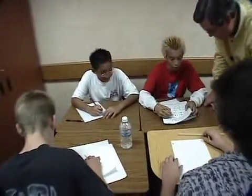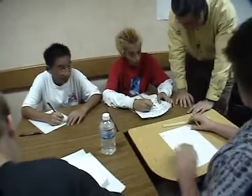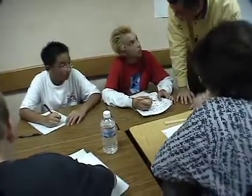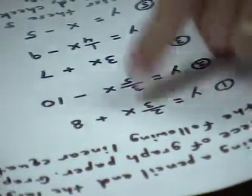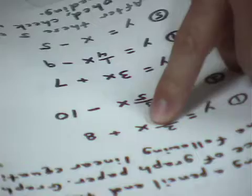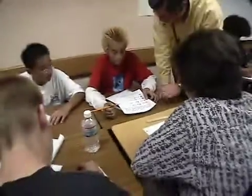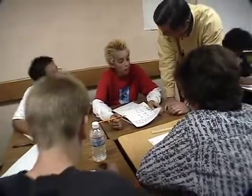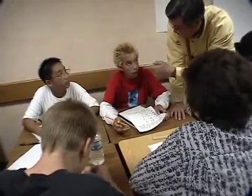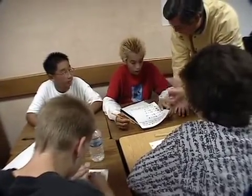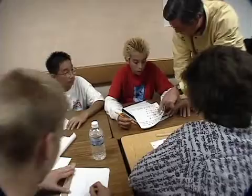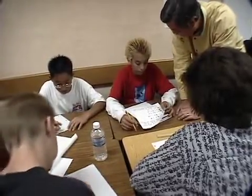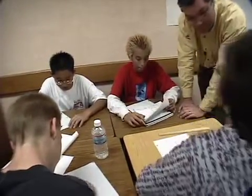Zero is our favorite number. You put in zero, two-thirds times zero is zero. Plus eight is eight. Now, because this fraction is two-thirds, do you remember what numbers you should pick? Maybe zero, three, and six would be good numbers to try with this one. That way, you don't have to worry about fractions or mixed numbers.